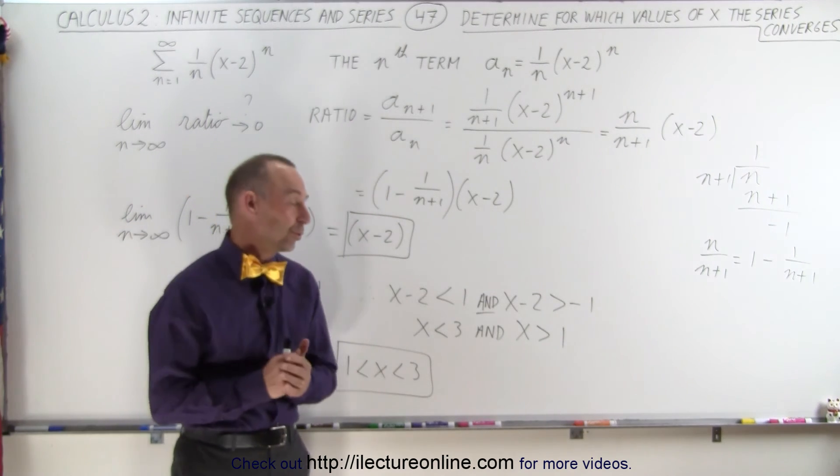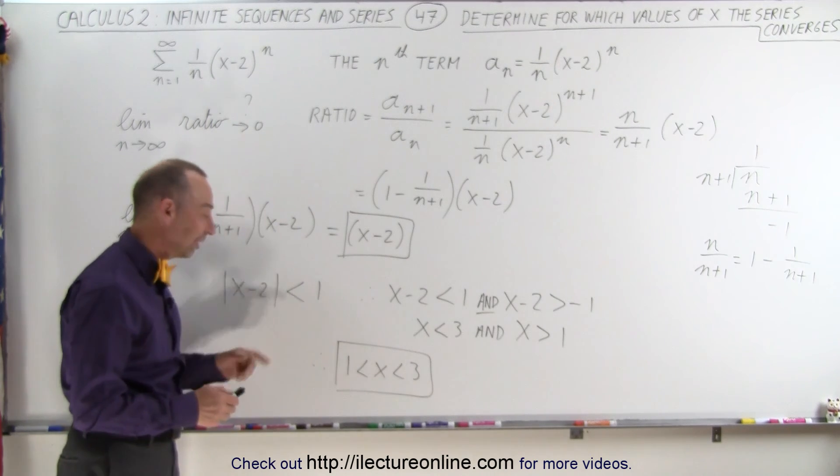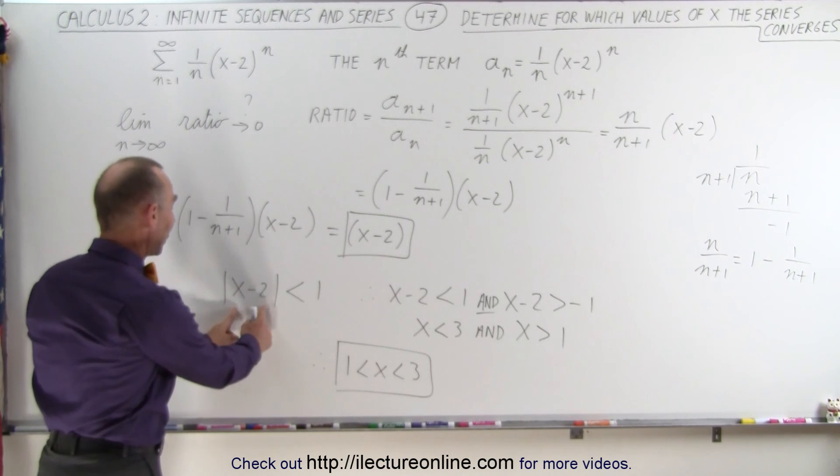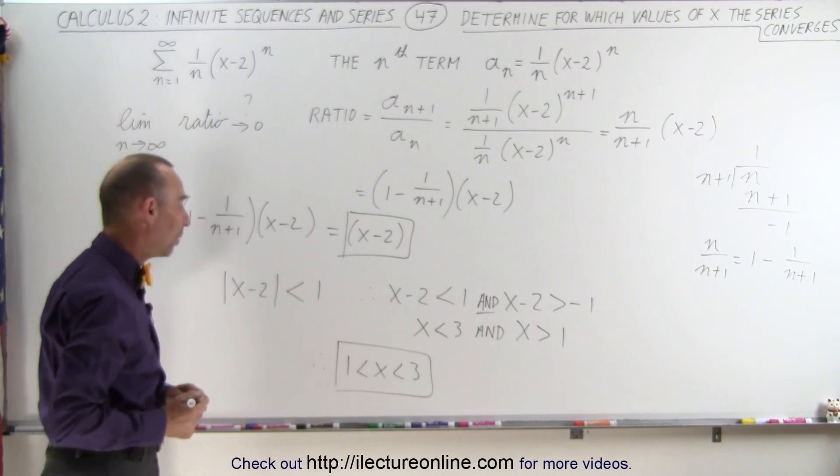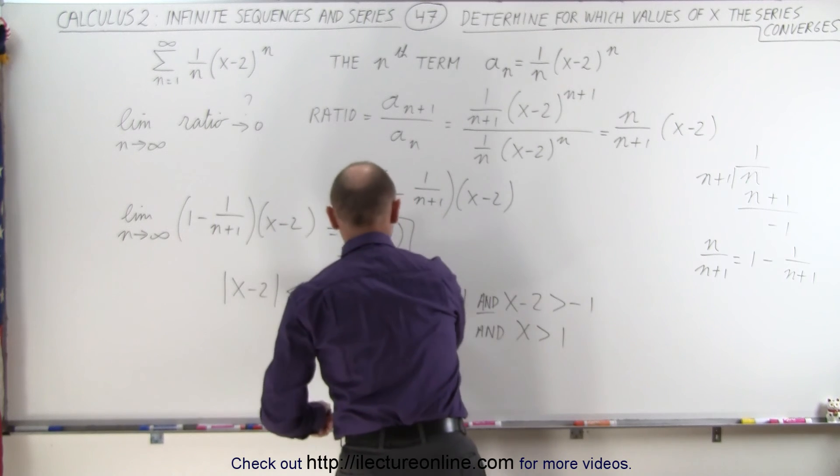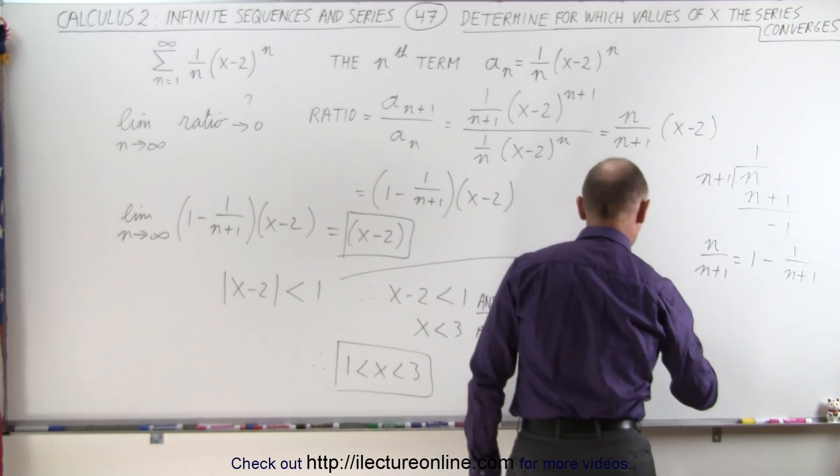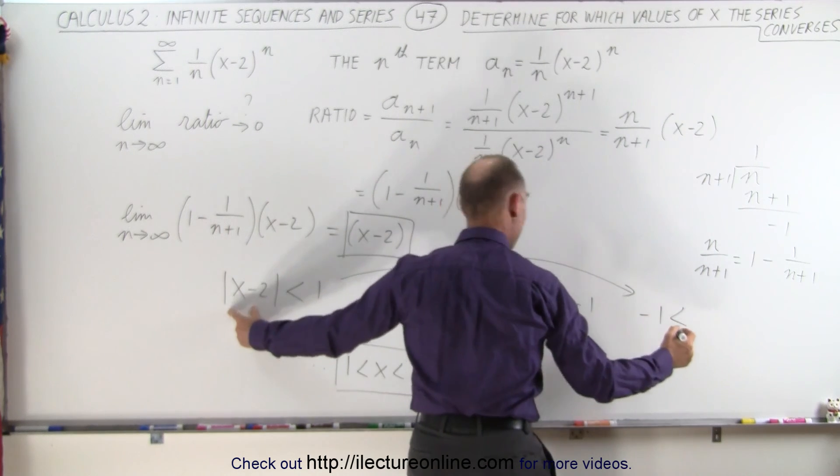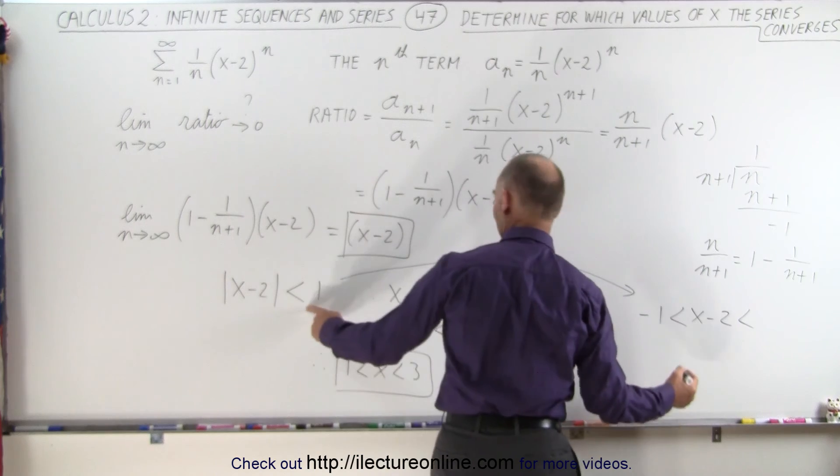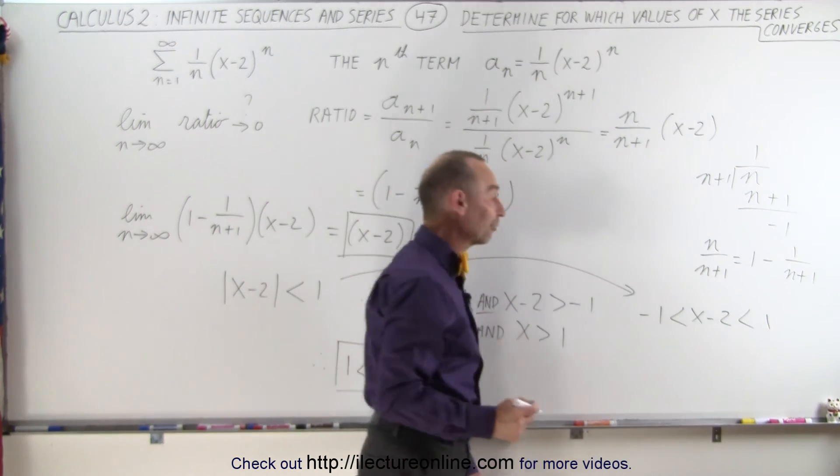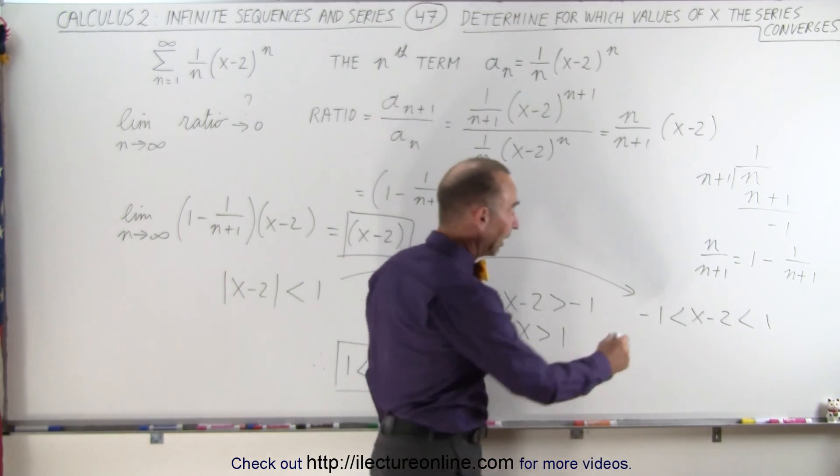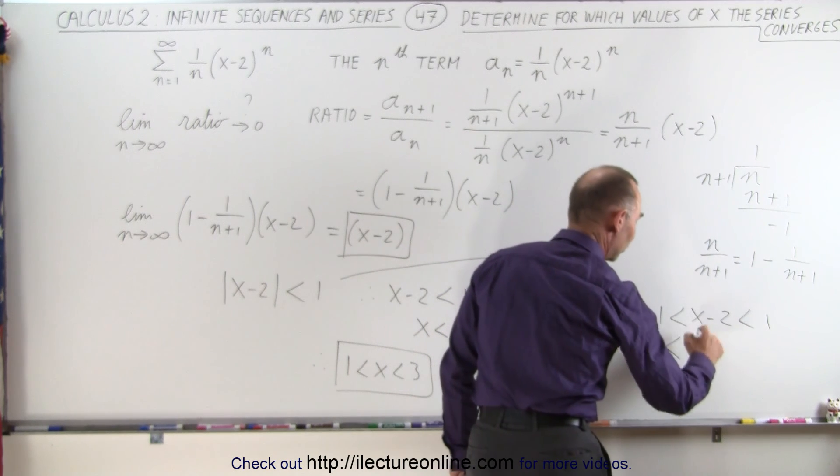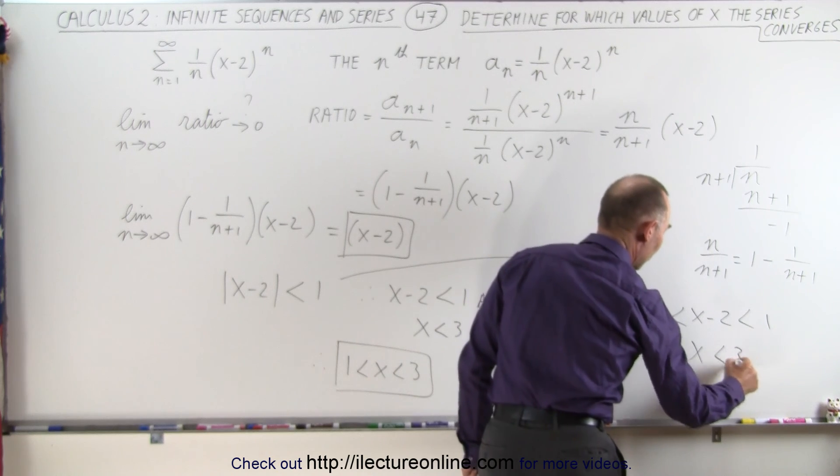And one more note, we can also solve for something like this in the following fashion. What we can do is we can simply place this value between the negative and positive value of 1. So we can say that negative 1 must be less than what's in here, x minus 2, which is less than the value there, 1. And of course, then you add 2 to the left, to the middle, and to the right. Add 2 to this one, you get plus 1, less than, add to this you get x, add to this you get 3.